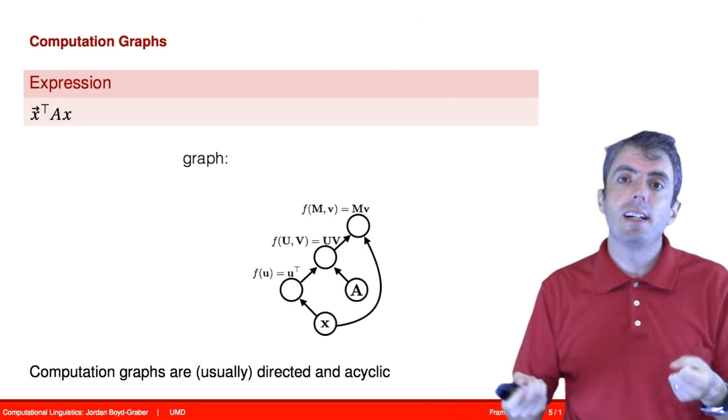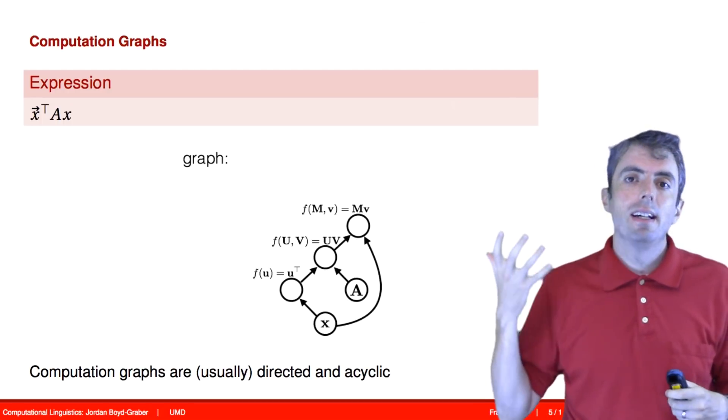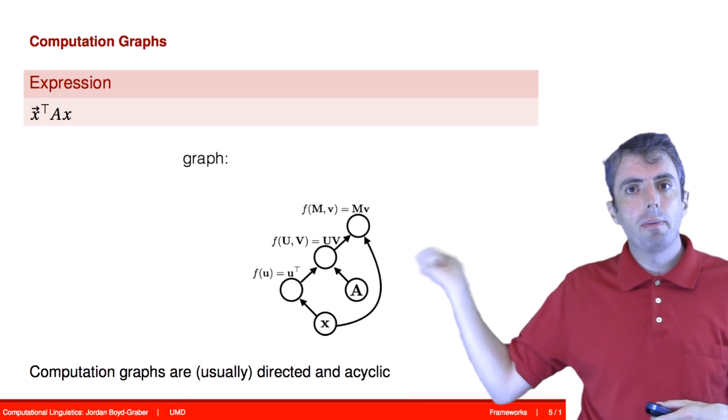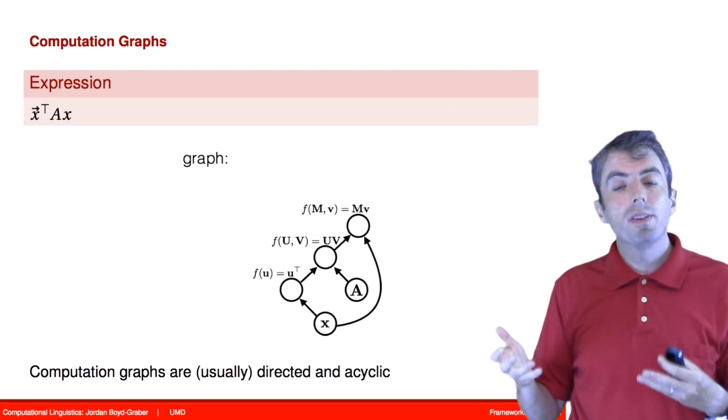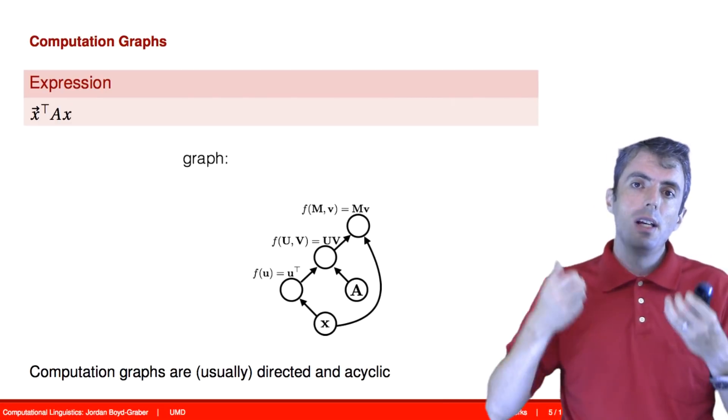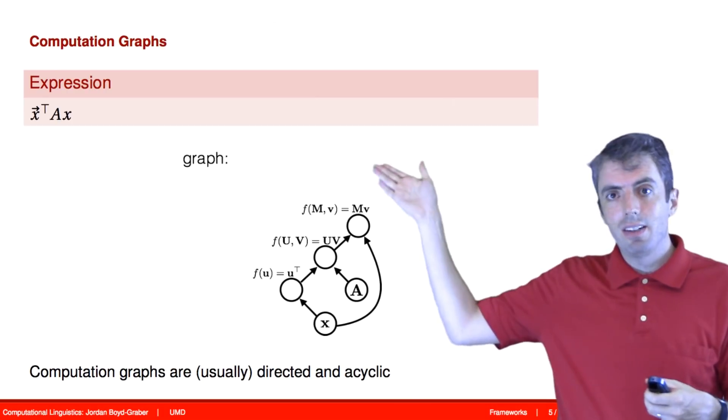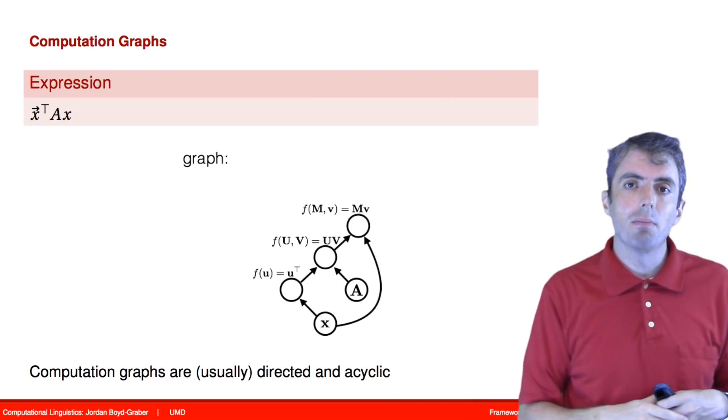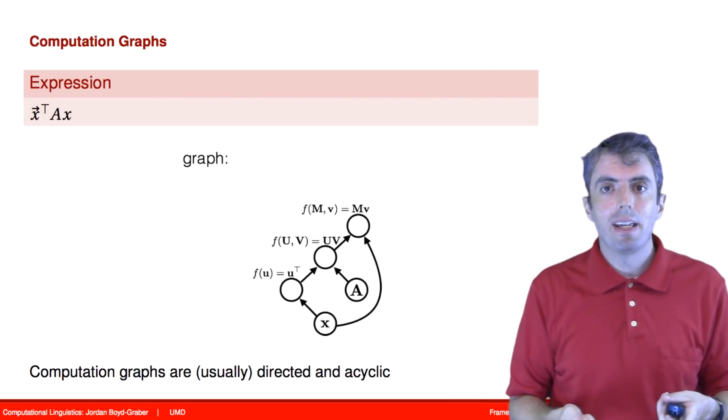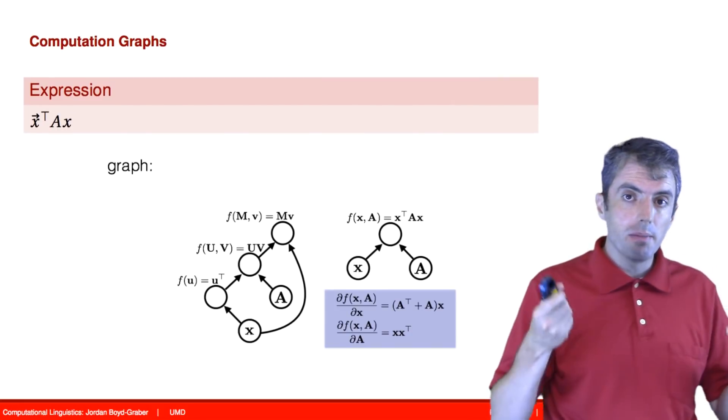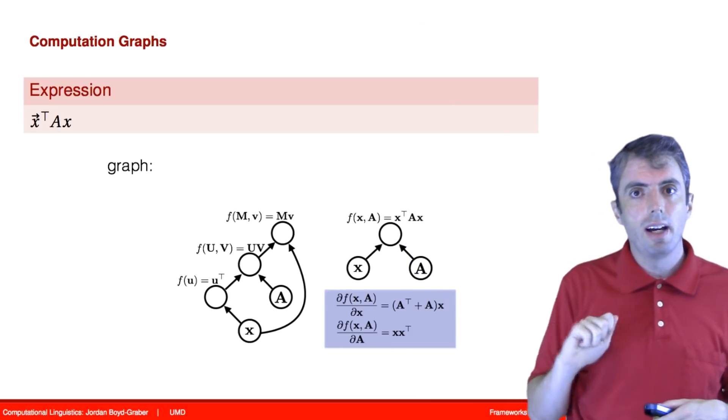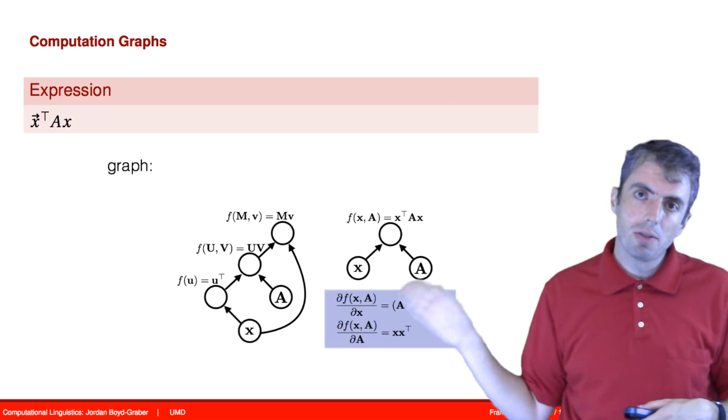The computation graph gives us a general way of creating expressions. If we also encode in these computation graphs the derivatives with respect to each of the individual operations, once we're done, we can use the chain rule to multiply all the edges together to create a full gradient of the desired loss function with respect to each of the underlying parameters. And this allows us to very quickly derive automatically the backpropagation that we talked about before.